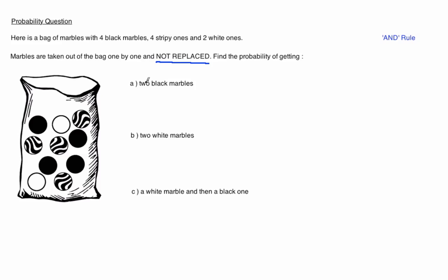So in part A, the probability of getting 2 black marbles: the probability of getting a black marble to start off with is 4 out of 10. After one of the black marbles are taken out there are only 3 left in the bag. If there are only 3 left in the bag it will now be 3 out of 9.